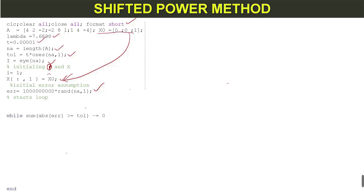Next we start the while loop. This while loop will end with the 'end' statement. When the condition becomes true, iterations will be stopped.